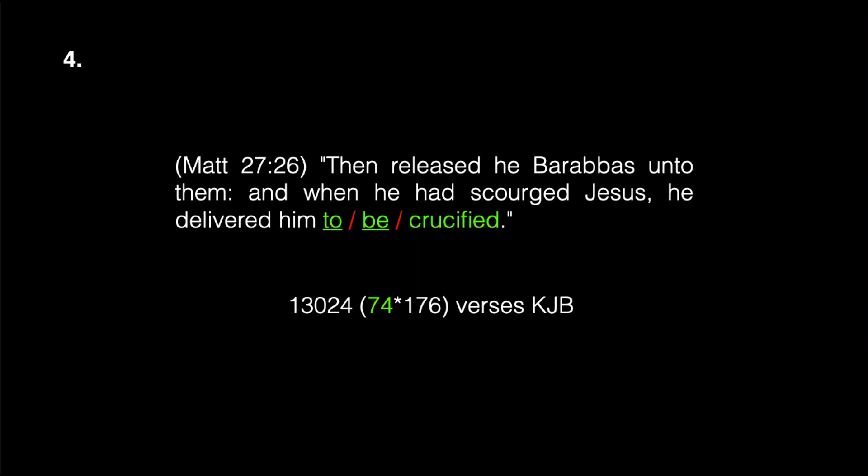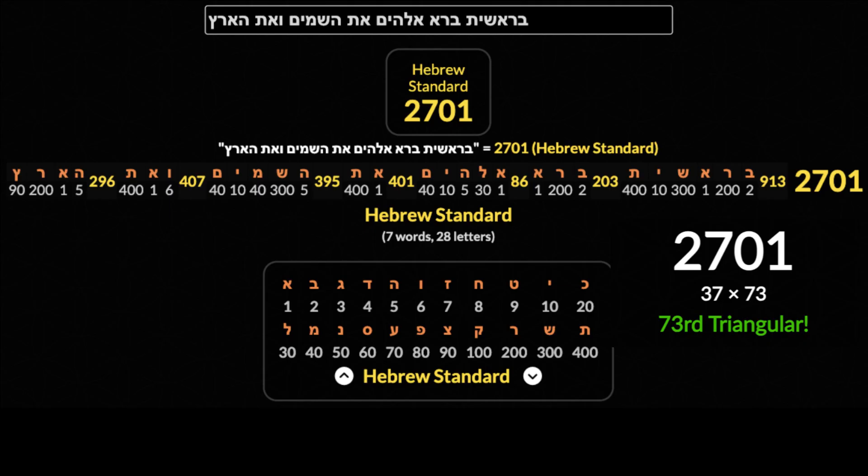The fourth occurrence of crucified is in Matthew 27:26: 'Then released he Barabbas unto them and when he had scourged Jesus he delivered him to be crucified.' The word 'to' — case sensitive — combined with 'be' — case sensitive — combined with 'crucified' appears in 1,324 verses of the KJB, which is 74 times 176. And here is Genesis 1:1 in the original Hebrew: using standard Hebrew gematria, the total value is 2,701 — 37 times 73. The third star number (37) times the fourth star number (73) equals 2,701, which is the 73rd triangular number.